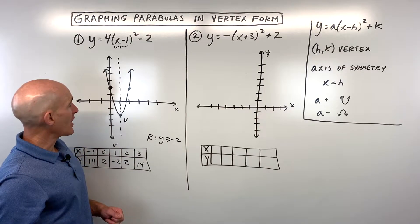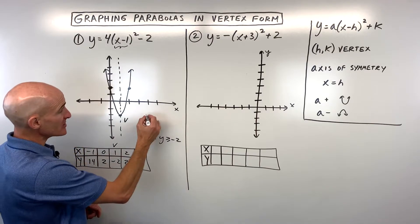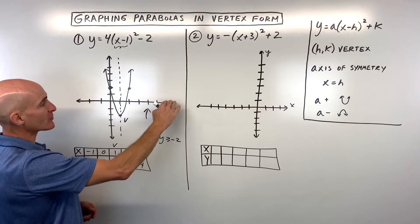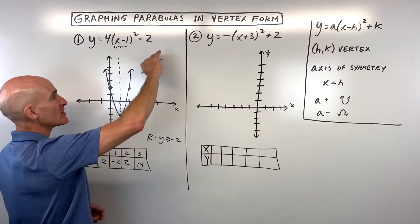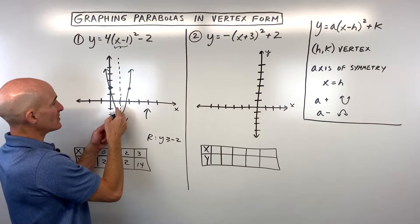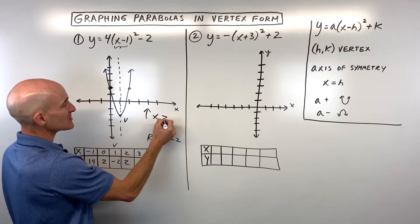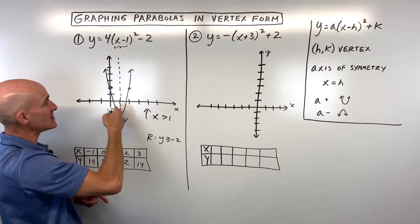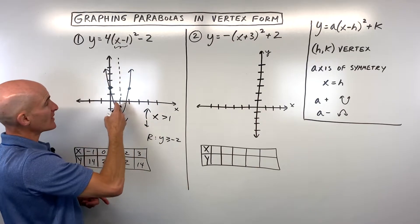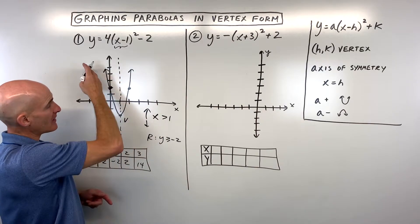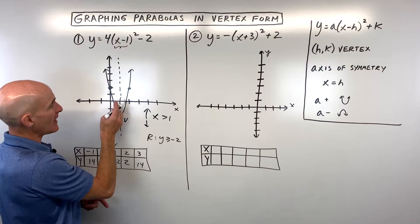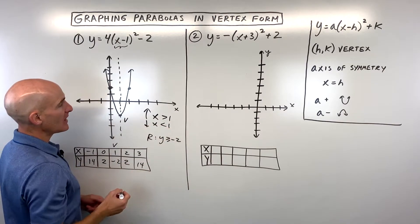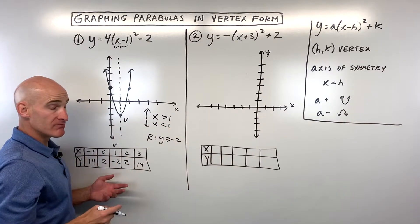Where is the graph increasing and decreasing? Reading from left to right, it's increasing when you're to the right of 1 — so when x is greater than 1. Where is it decreasing? That's when it's going down to the right, like a negative slope — that's when x is less than 1. And you got it.